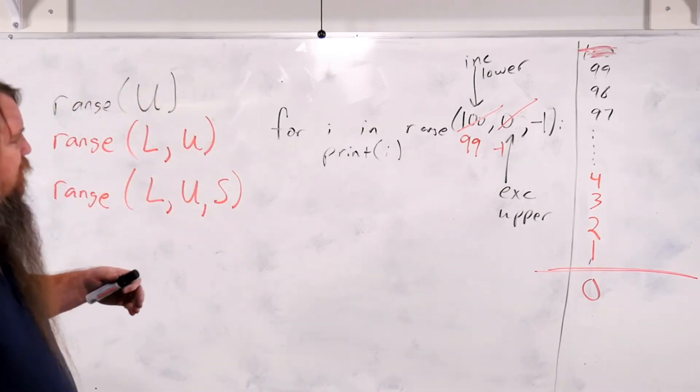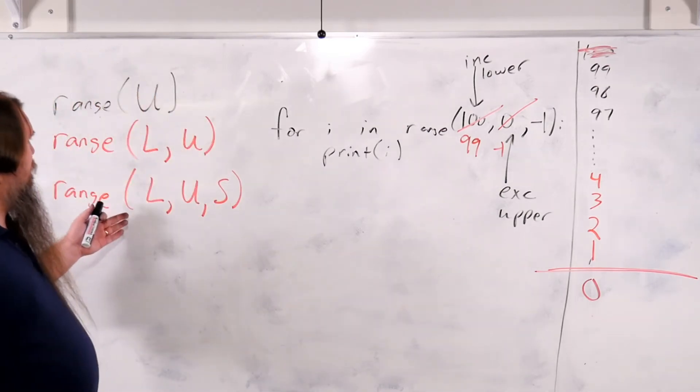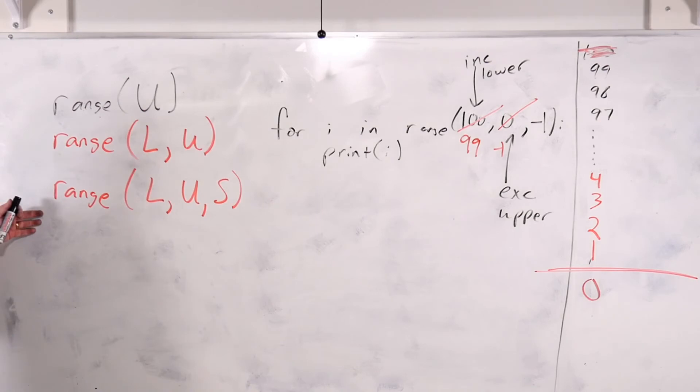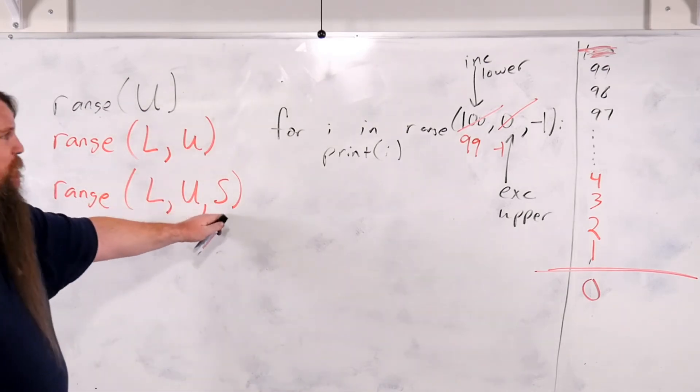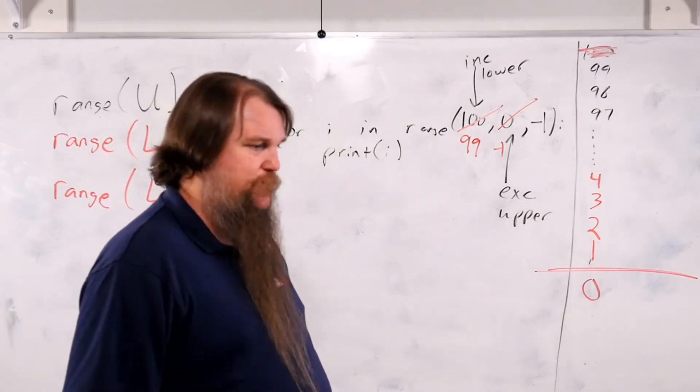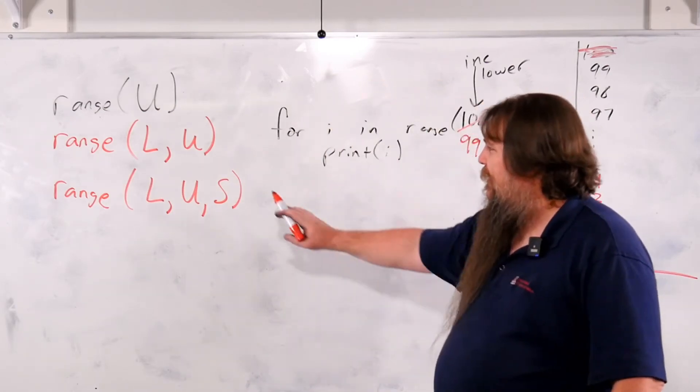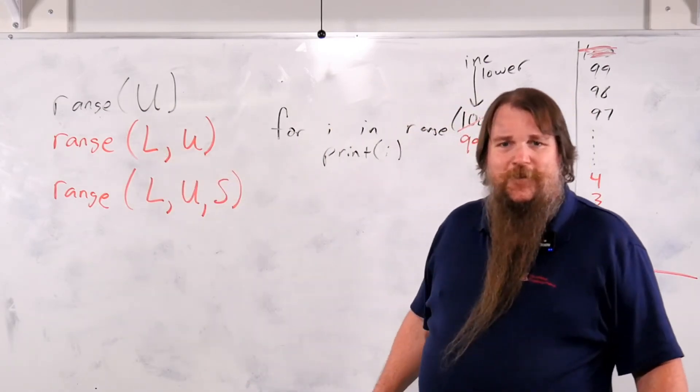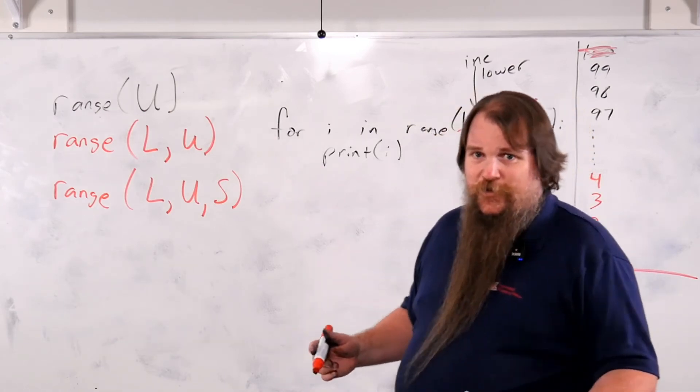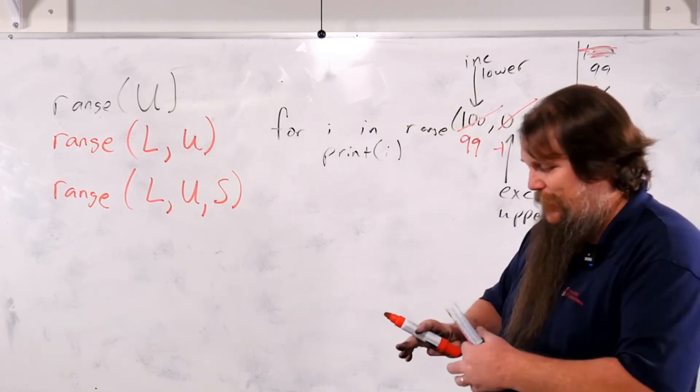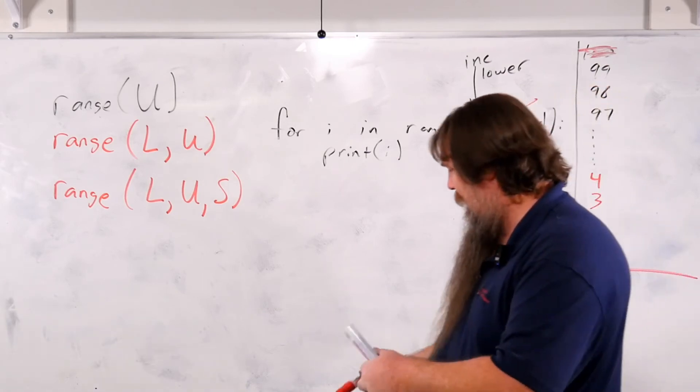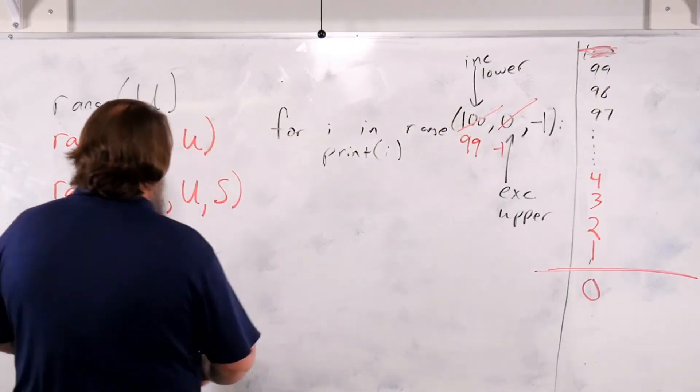All right. So now you can do range with three different forms, including the possibility of doing negative. That's pretty cool. But remember that we said that this reminded us of slicing. Is it possible to do slicing with three parameters? Absolutely. And it works exactly the same way.